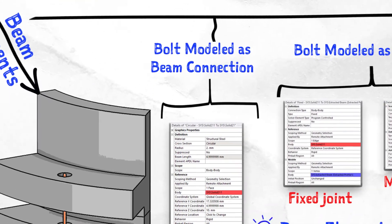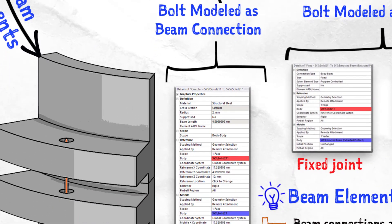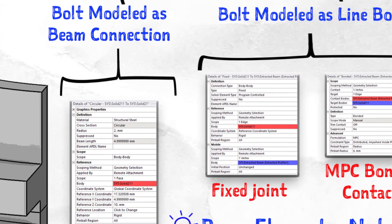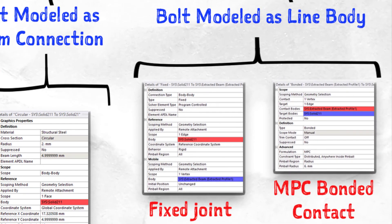In case of beam elements, ANSYS Mechanical offers beam connections, which allow users to create bolts as beam elements that are connecting the two mating parts. The beam nodes are connected to mating parts using MPCs. If the bolt is modeled as a line body, then one can either use a fixed joint or an MPC bonded contact to connect the line vertices to the mating parts.